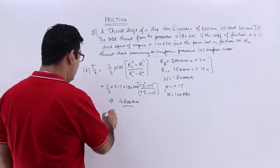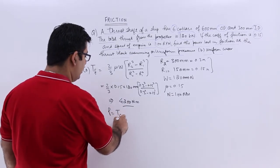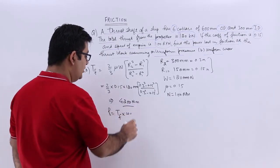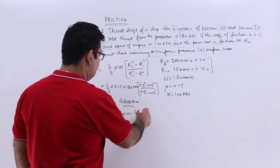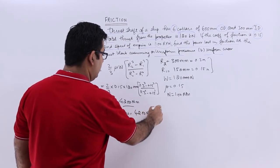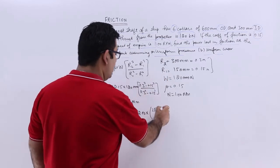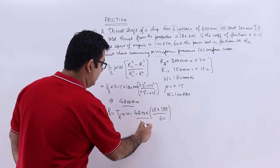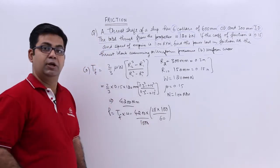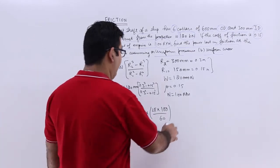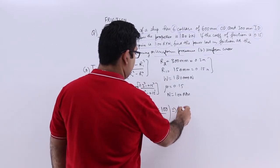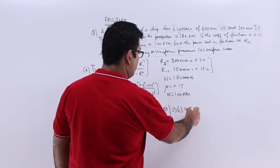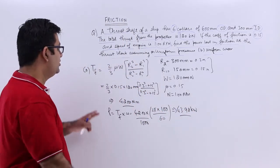The power lost would be this torque into omega, that is 4200 into 2 pi into n is 100 upon 60, and let's divide this by 1000 to get kilowatts. So this would be almost 44 kilowatts. So this is for uniform pressure.